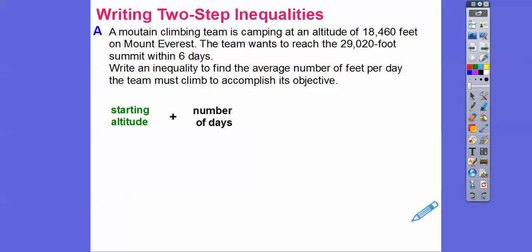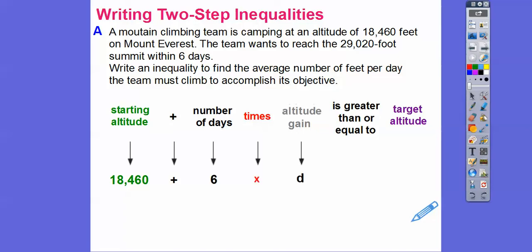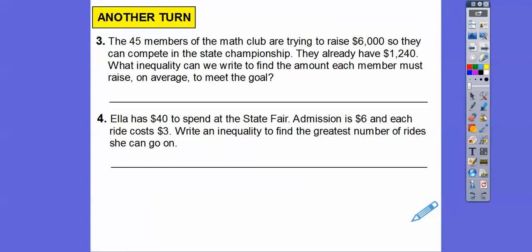And then we're going to add the number of days times the altitude gain. So that's going to be greater than or equal to, because we want it to be greater than or equal to their goal of 29,020. That's their target altitude. So the starting altitude is 18,460. Number of days, we have six days times the altitude that we're going to do each day. And we want that to be at least or greater than or equal to their 29,029. So our inequality, and it's not asking us to solve, that's in the next lesson. And that's our answer right there. 18,460 plus 6D greater than or equal to 29,029.